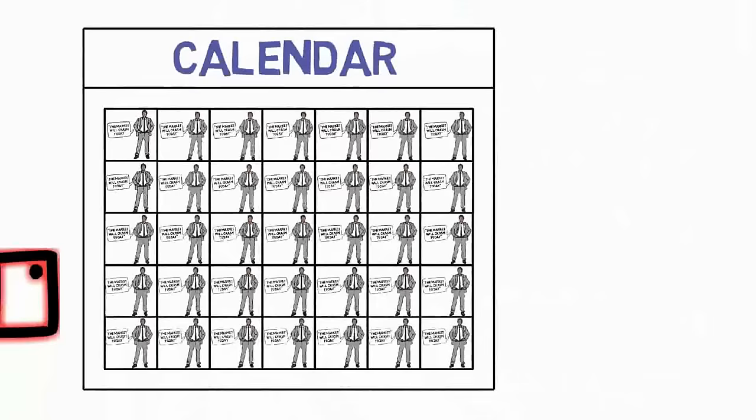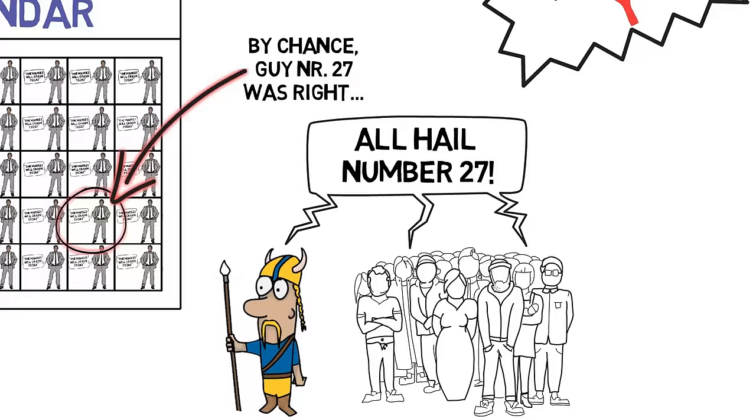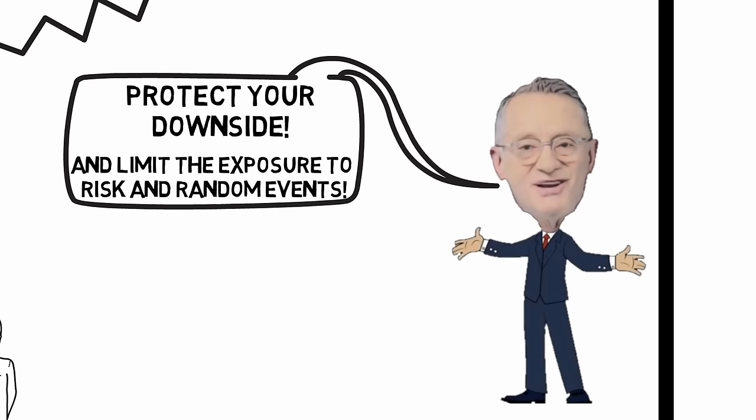Every single day there are investors betting on a bear market. At some point, some of them will turn out to be right. But it does not automatically make them right in their forecast. It may just have been luck. An intelligent investor will invest in a way that limits his downside, but which leaves a large upside. High priority should be placed on limiting the exposure to risk and random events, that could severely damage returns.